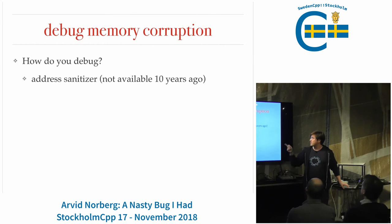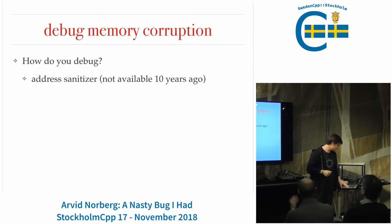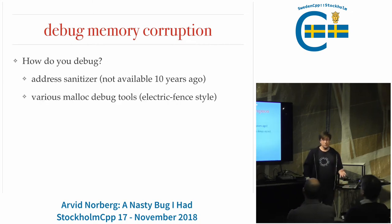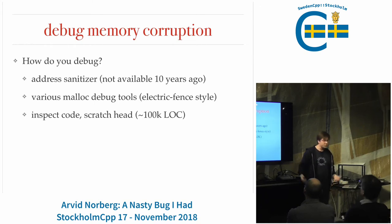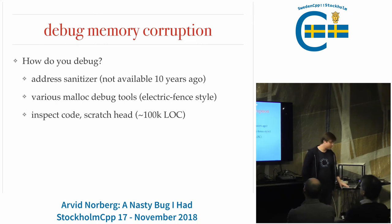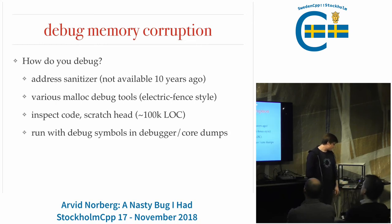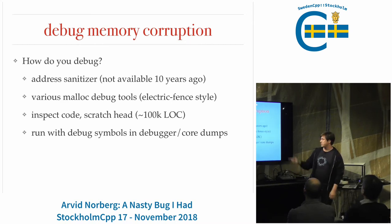These days you would use address sanitizer, but that wasn't available 10 years ago. There used to be other kinds of malloc debug tools, like electric fence style, where you allocate a page before and after your allocation and make those non-readable, non-writeable. You look at code and scratch your head. With about 100,000 lines of code, it takes a long time. You run in a debugger and hope you catch it, or look at core dumps.